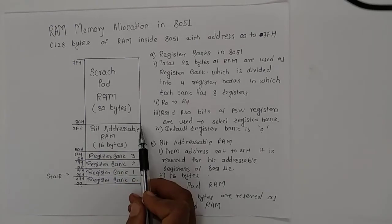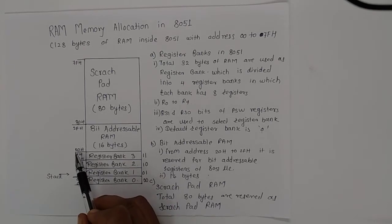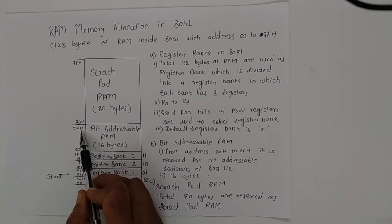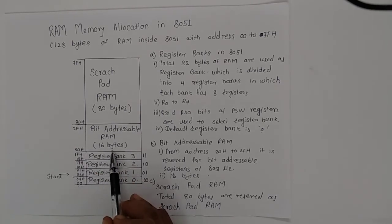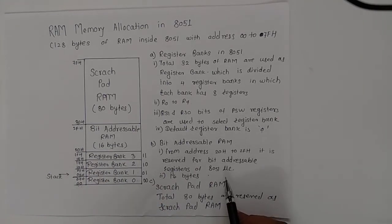The second area is bit addressable RAM. The address of this is ranging from 20H to 2FH, which is 16 bytes. The registers which are bit addressable are stored in this bit addressable RAM.